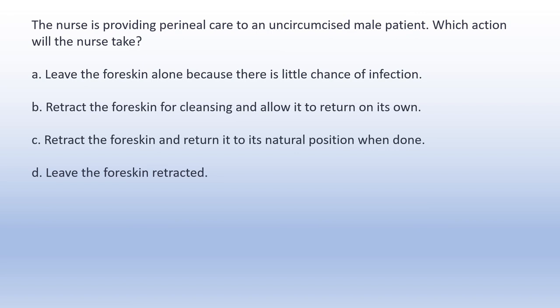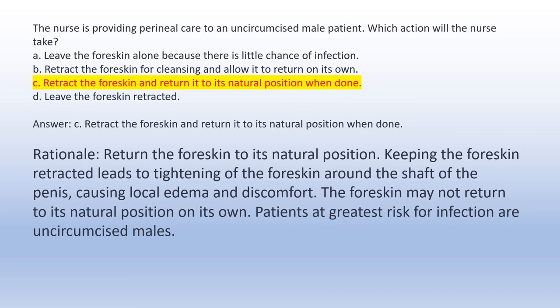The nurse is providing perineal care to an uncircumcised male patient. Which action will the nurse take? A. Leave the foreskin alone because there is little chance of infection. B. Retract the foreskin for cleansing and allow it to return on its own. C. Retract the foreskin and return it to its natural position when done. D. Leave the foreskin retracted. Answer C: Retract the foreskin and return it to its natural position when done. Rationale: Keeping the foreskin retracted leads to tightening around the shaft of the penis causing local edema and discomfort. The foreskin may not return to its natural position on its own. Uncircumcised males are at greatest risk for infection.